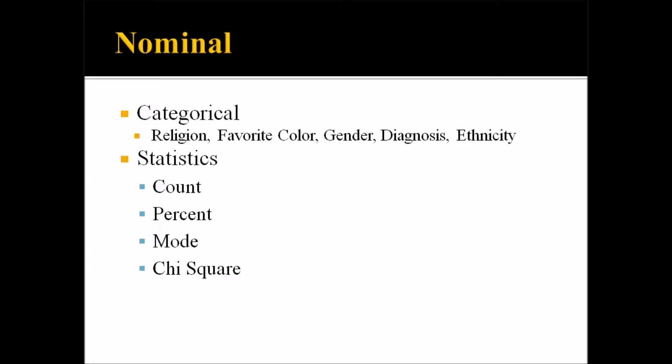If you sample participants and they provide favorite colors like red, green, blue, and yellow, that represents information that is potentially useful, but you can't rank those colors. You can't have one color as superior to or representing some higher state than another. That really limits the statistics we can use when looking at the nominal level of measurement.